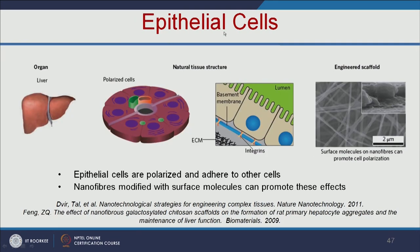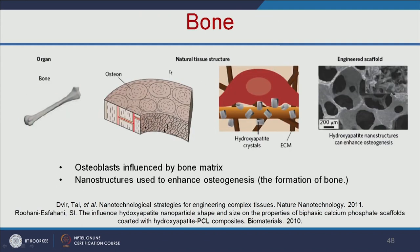For epithelial cells, which are polarized and adhere to other cells, nanofibers modified with surface molecules can promote natural tissue structure effects. For bone tissue engineering, osteoblasts are influenced by the bone matrix. Hydroxyapatite nanostructures with a porous structure similar to bone can enhance osteogenesis — that is, the formation of bone.